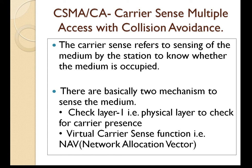Before we see the difference between DCF and PCF, let us understand carrier sense. Carrier sense refers to sensing of the medium by the station to know whether the medium is occupied by some other station or is free to transmit. There are basically two mechanisms to sense the medium: first, physical layer carrier presence check; and second, virtual carrier sense function, that is NAV — Network Allocation Vector. It is better to check both mechanisms to determine the idle state of the medium.